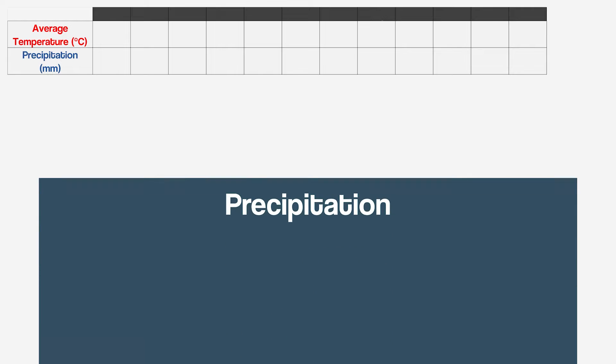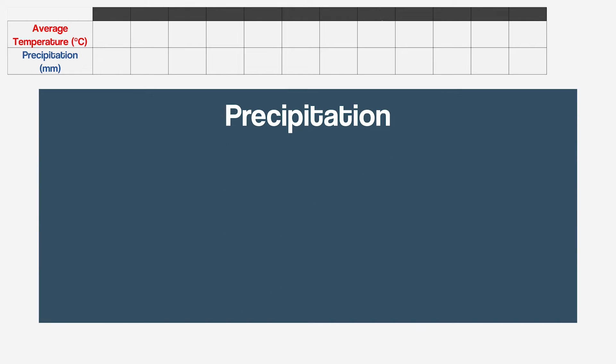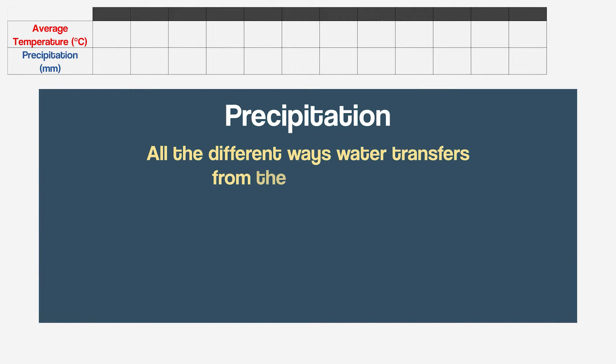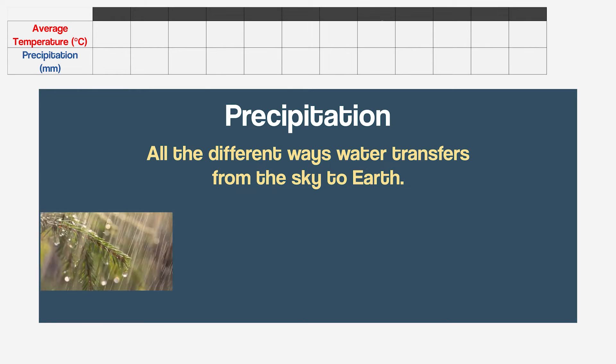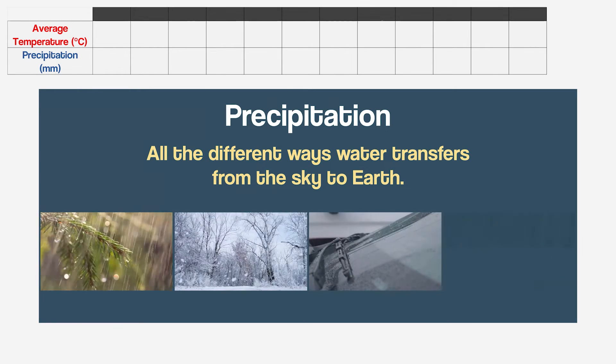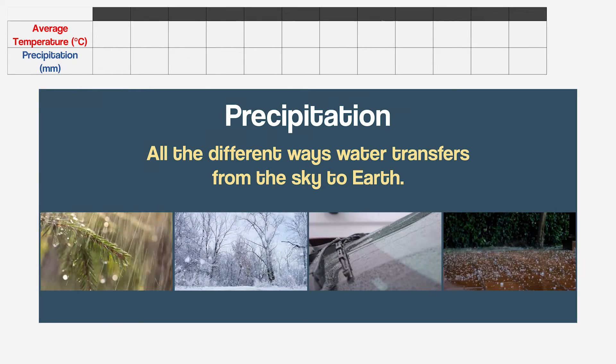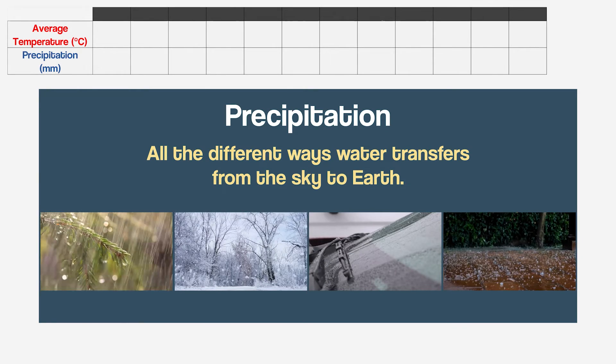If you're not familiar with the word precipitation, it just means all the different ways water transfers from the sky to earth. So rain, snow, sleet, hail — all of that added together.